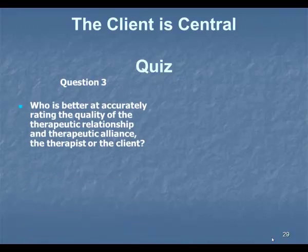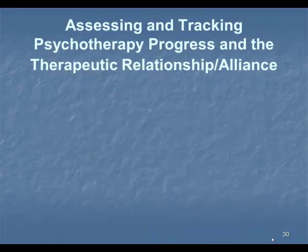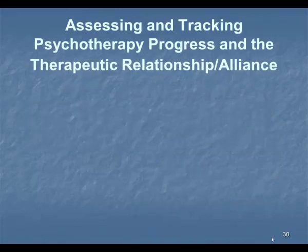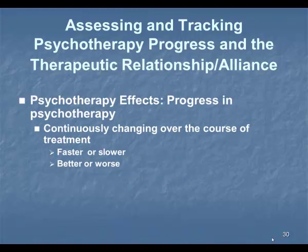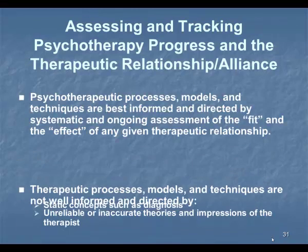Who is better at accurately rating the quality of the therapeutic relationship? Again, the client. They are far superior in their rating processes of therapy rather than the therapist. The client's rating is superior in predicting whether they're going to drop out or not. Indications that a client is going to drop out: they don't turn up, they're late, they're cancelling. So you need to think about how you track and assess the therapeutic process overall.